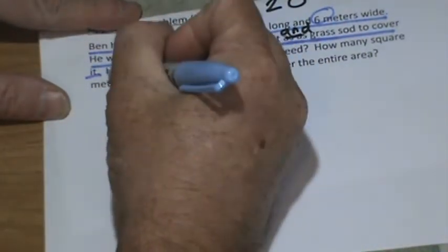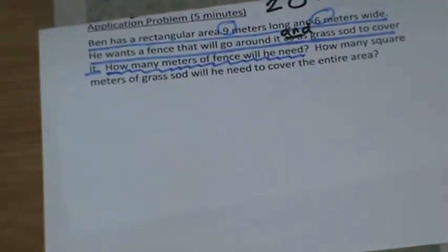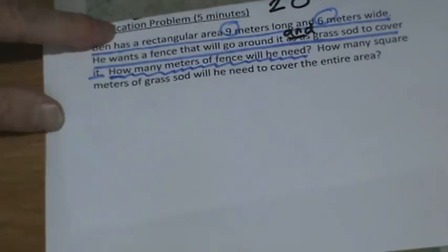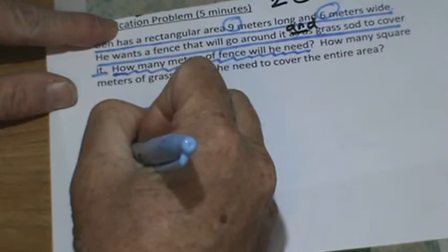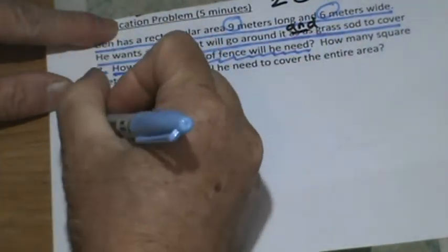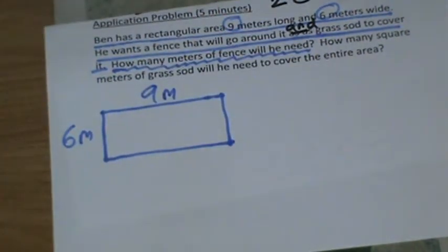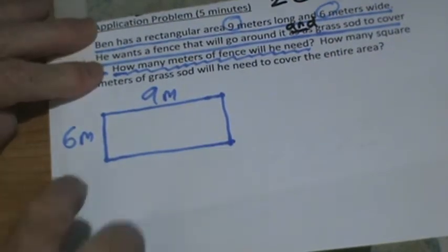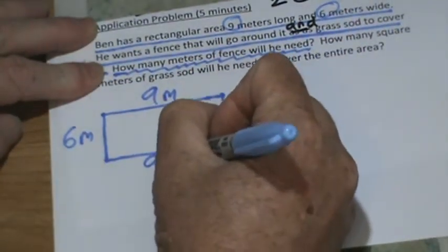Maybe you've seen that grass rolled up to cover it all up. What we need to find out: first of all, we need to find out how many meters of fence will he need? Get ready to write on your scratch paper because we're going to start drawing his area. Here's Ben's area and he's going to build a fence around it — it's six meters and nine meters. This is called perimeter. Maybe you remember perimeter from last year. How do we figure out perimeter? We add all the sides.